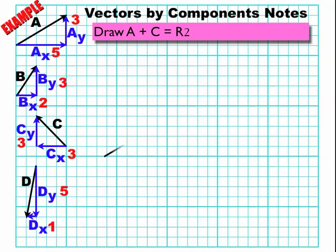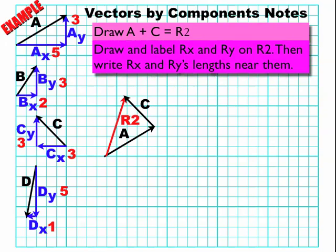So this time I'll do A plus C equals R2. So there's A, there's C. And if C goes left, it's going to have a negative piece to it. Here's R2. Now I can look at the lengths of R2 in the X and Y direction. And so I can see I've got R2 in the X direction, R2 in the Y direction. In the X direction, it's 2. In the Y direction, it's 6.